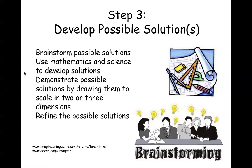Next, develop possible solutions — how many depends on what's going on. You could have one right away, or a team of engineers might come up with 20 possibilities. This is the type of situation where you throw every idea out on the table — there are no dumb ideas. Brainstorming is all about throwing out ideas no matter how ridiculous or far-fetched they sound, because it gets people thinking about how to tweak a possible idea and opens up numerous possibilities.